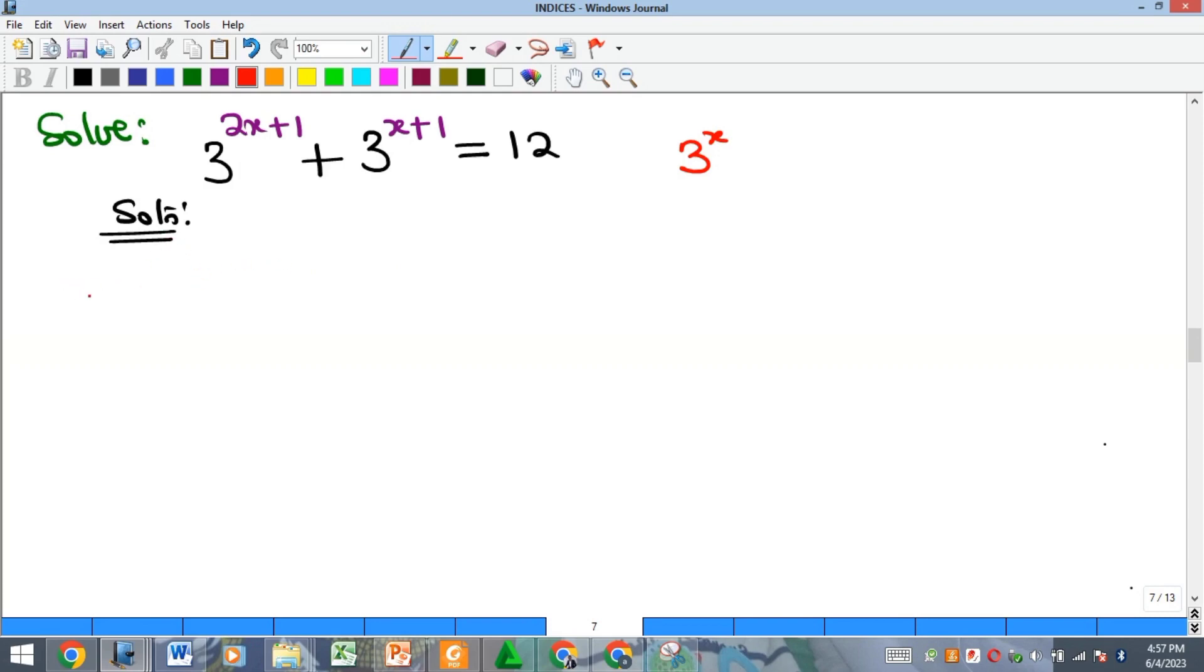So of course we know that this is the same thing as 3 raised to the power of 2x multiplied by 3 raised to the power of 1, because multiplication of the same base changes to addition of the power. Okay, and that's plus, so this is going to be 3 raised to the power of x multiplied by 3 raised to the power of 1, which is equal to 12.